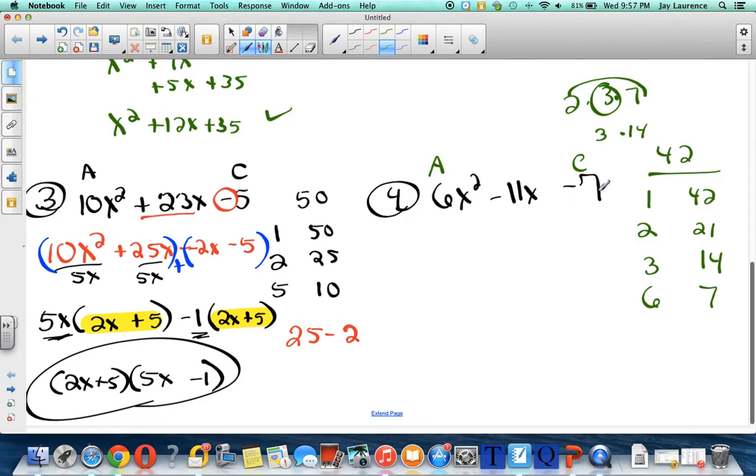Now I need 2 factors of 42 that subtract, because the 7 is negative, to get negative 11. Well, 14 minus 3 is 11, right? But I want negative 11. How about 3 minus 14? There you go. You can see why I made such a big deal about being able to subtract positives and negatives. You need to be able to do that, ladies and gentlemen. You can't just keep blowing it off.